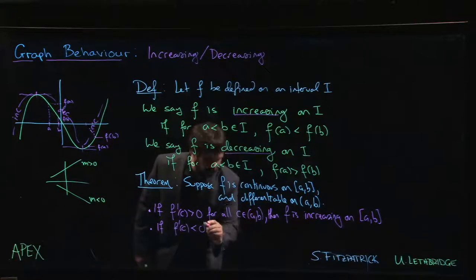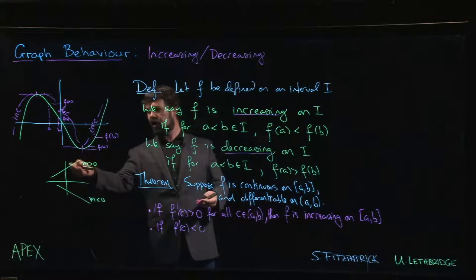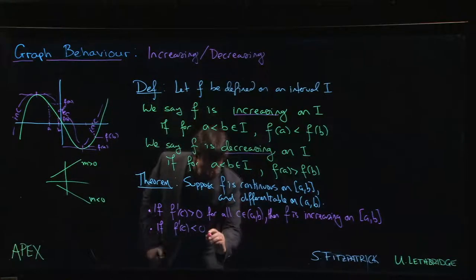So if the derivative is positive - if we have positive slope for the tangent line everywhere - we've got our increasing function. If we have negative slope everywhere, well then f is decreasing on that interval.